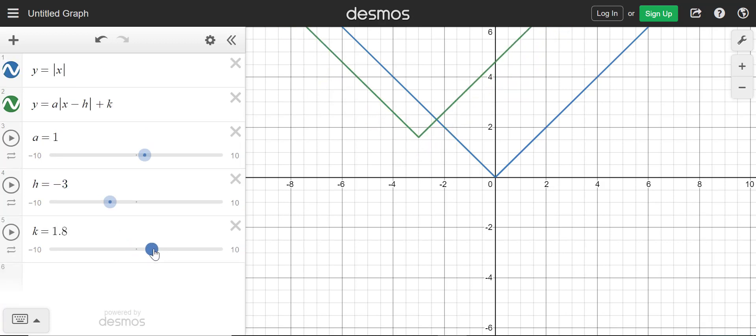And then, of course, k here is going to move it up or down. So it's plus k on the outside. So if it is plus 2, it's going to move it up 2. And if it is minus 2 on the outside, it's going to be moving down 2.